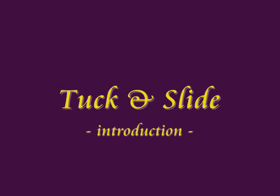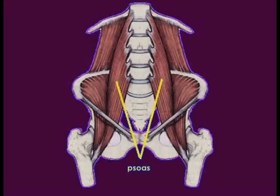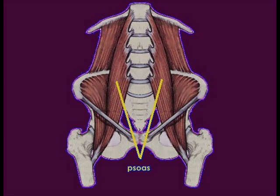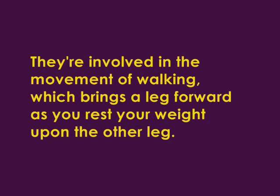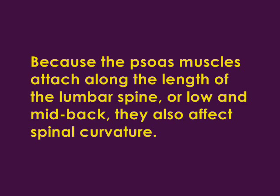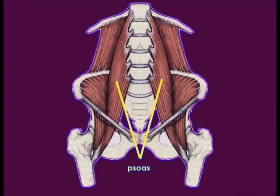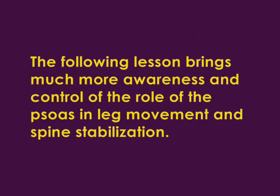Tuck and slide introduction: the psoas muscles form a bridge between the legs and the torso. They're involved in the movement of walking, which brings a leg forward as you rest your weight upon the other. Because the psoas muscles attach along the length of the lumbar spine, they also affect spinal curvature. The following lesson brings much more awareness and control of the role of the psoas in leg movement and spine stabilization.